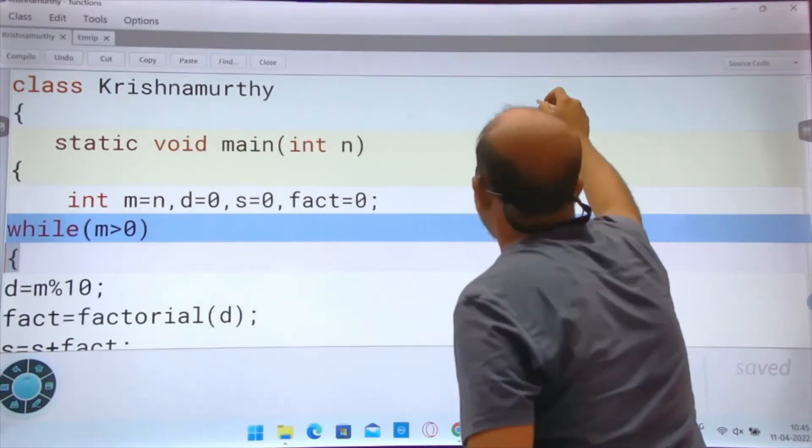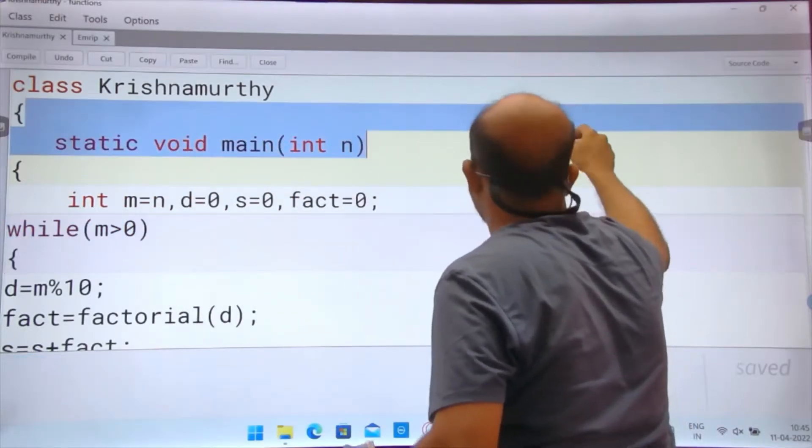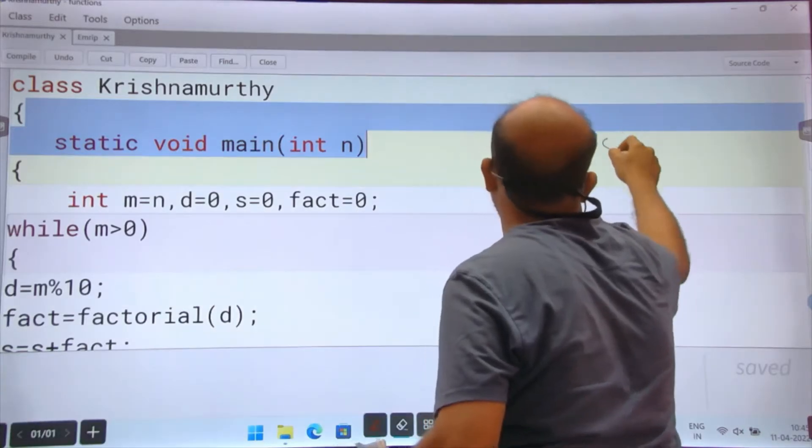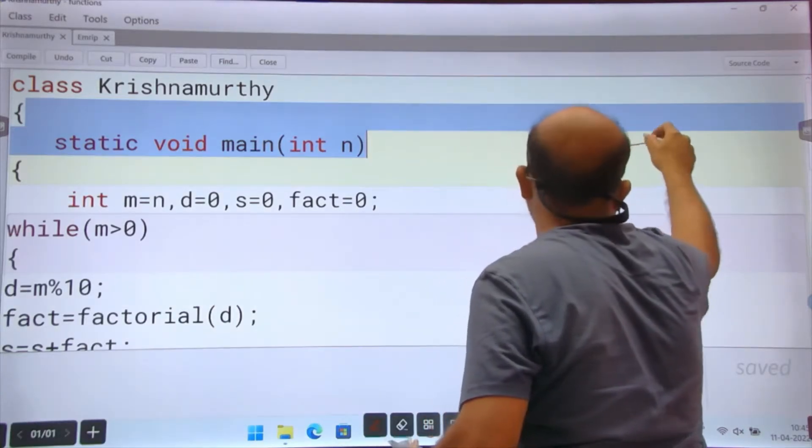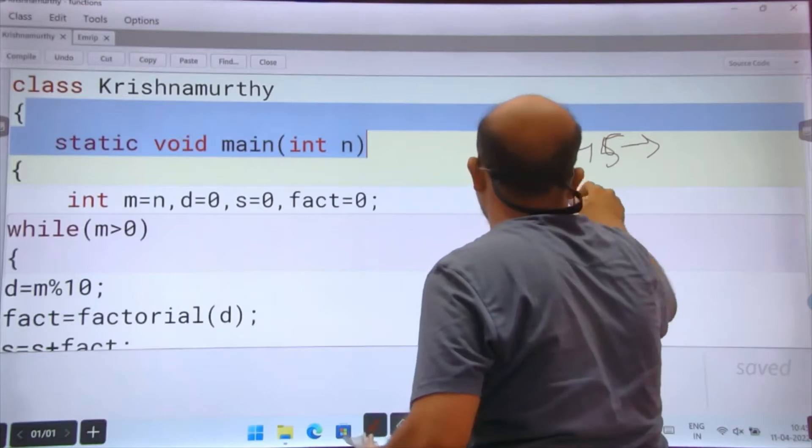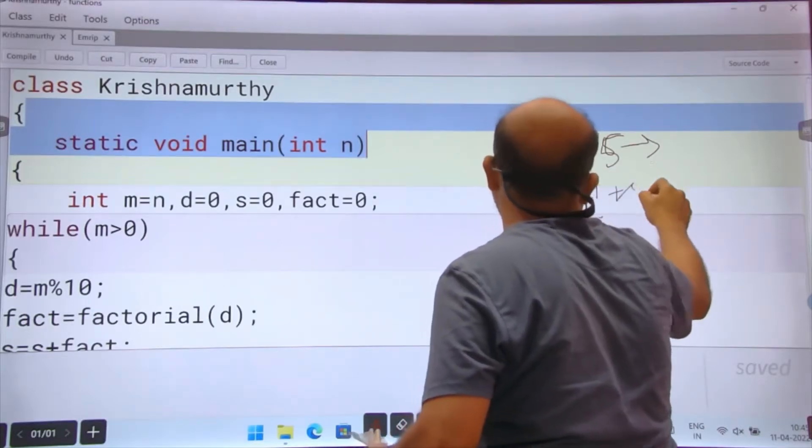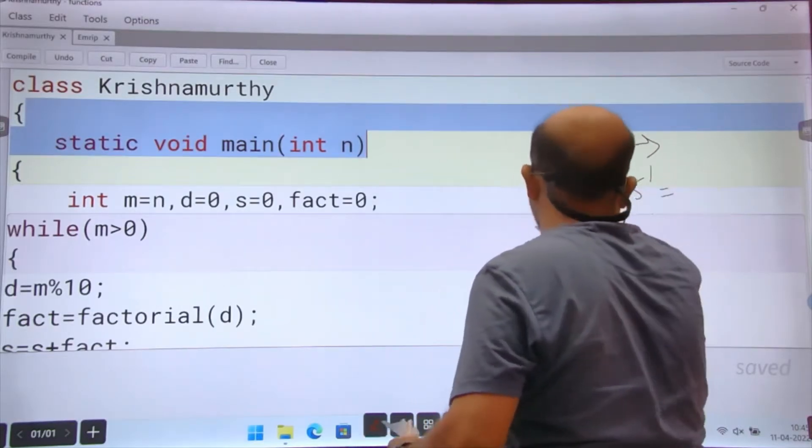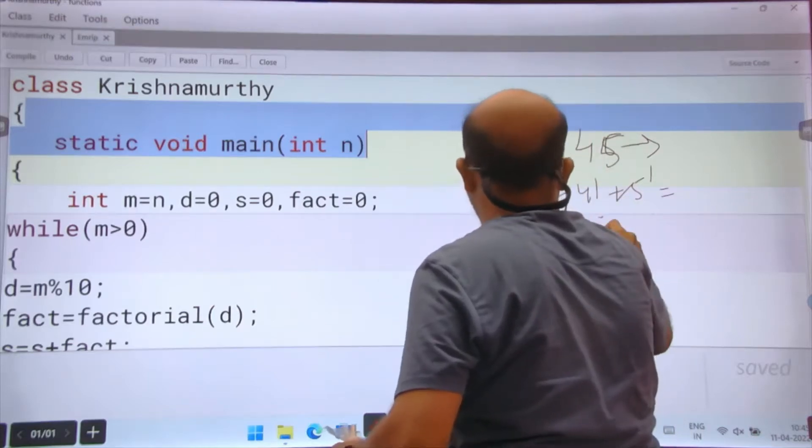What is a Krishna Murthy number? Somewhere they call it Peterson, somewhere special number. It came in ICSE and even ISC. 1 factorial is 1, 4 factorial is 24, 5 factorial is 120, and total is 145.